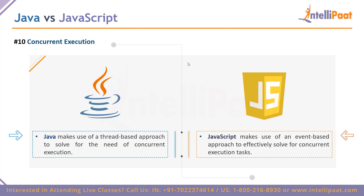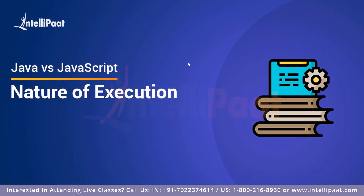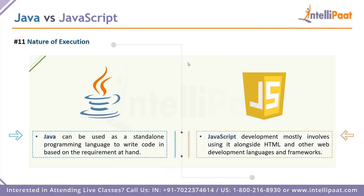Coming to point number ten — concurrent execution. If you have multiple programs or applications you want to run at the same time, Java uses a thread-based approach where multiple threads divide and share the computing load across execution units to achieve concurrency. JavaScript is slightly different — it does not use a thread-based approach but instead uses an event-based approach to solve all concurrency requirements. This is another big difference between Java and JavaScript.